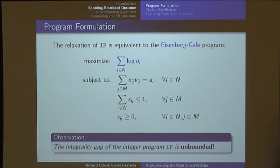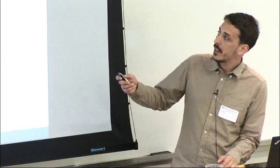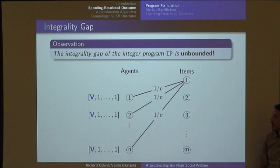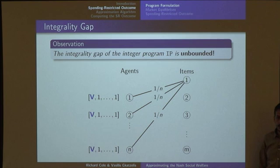The first reaction is great — let's solve this program and then try to round it to get a good approximation algorithm. Unfortunately, this fails miserably because the integrality gap of this program is unbounded. If every agent has a very strong preference for the first item, in the fractional solution the players can share the top item, but in reality only one of them will get it. This shows there's no way to use the fractional objective value as an upper bound to prove a good approximation.